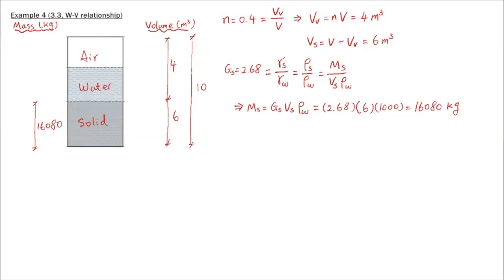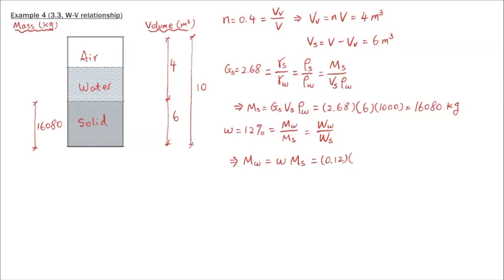Once we have the mass of solids, we use moisture content of 12%, defined as mass of water over mass of solids. Note this ratio is the same as weight of water over weight of solids, since mass and weight differ only by gravitational acceleration. So mass of water equals moisture content times mass of solids: 0.12 times 16,080, which gives approximately 1,929.6 kg.